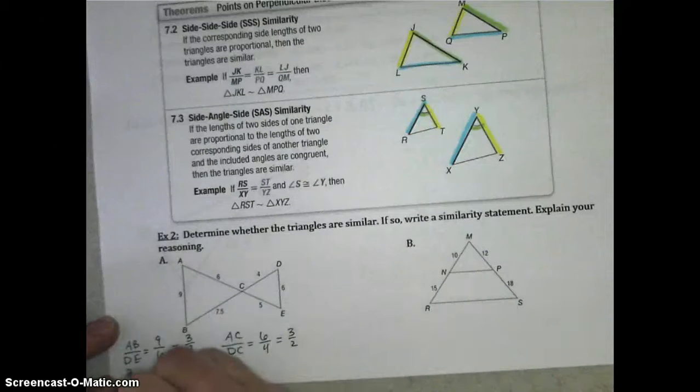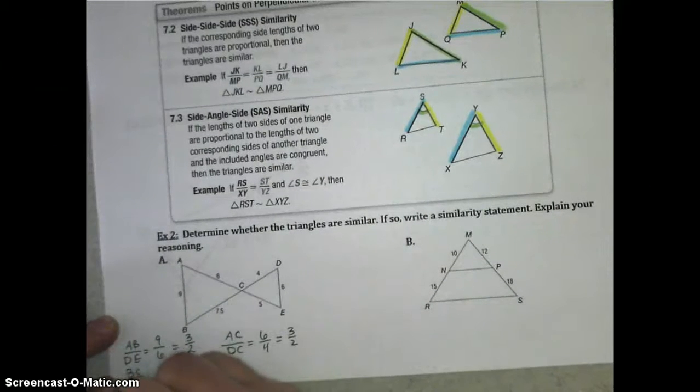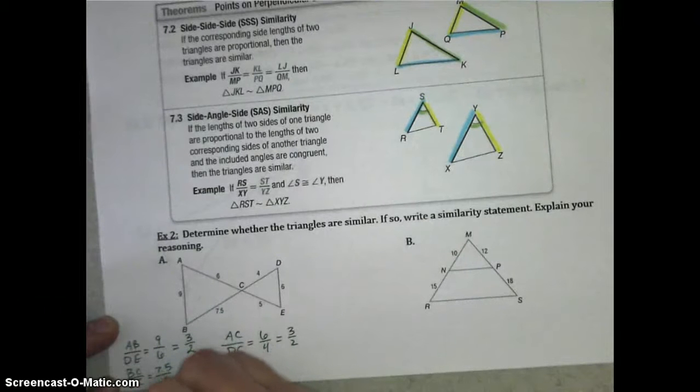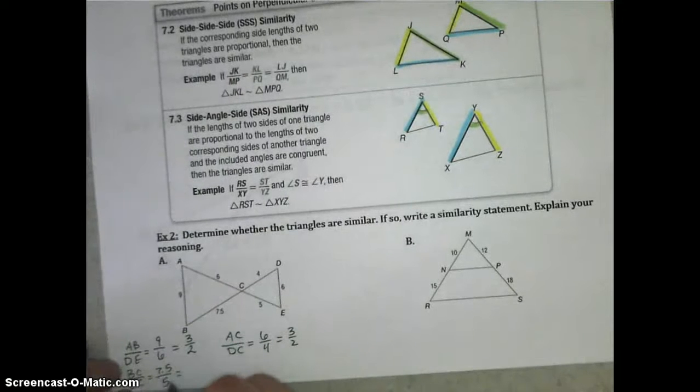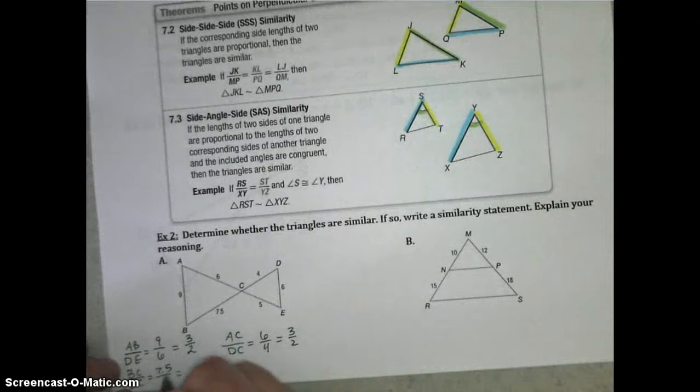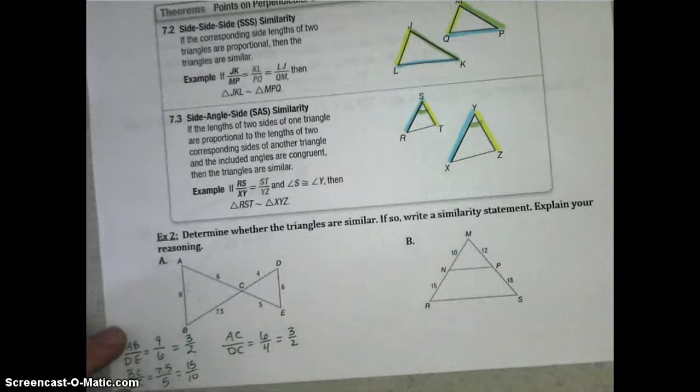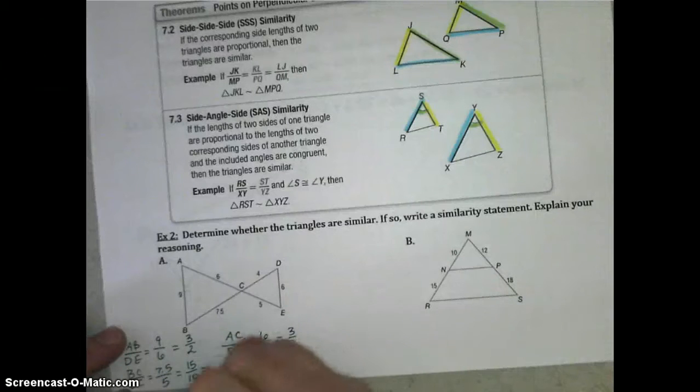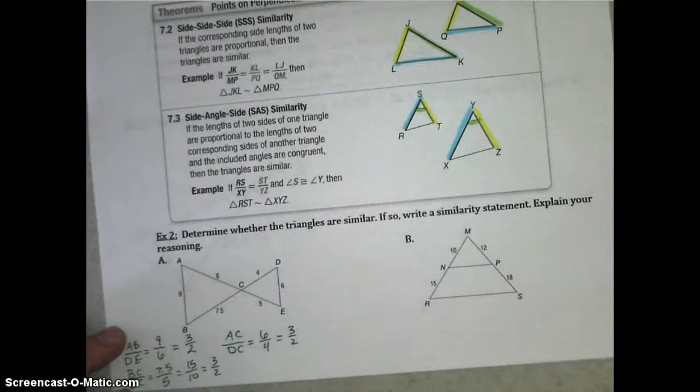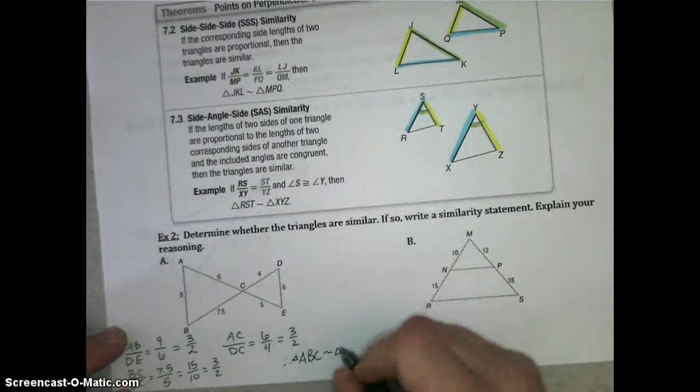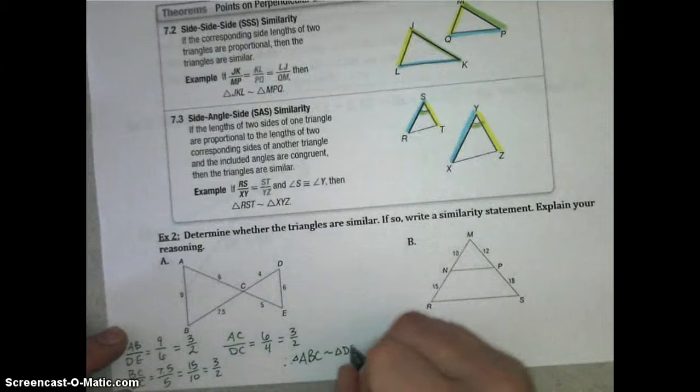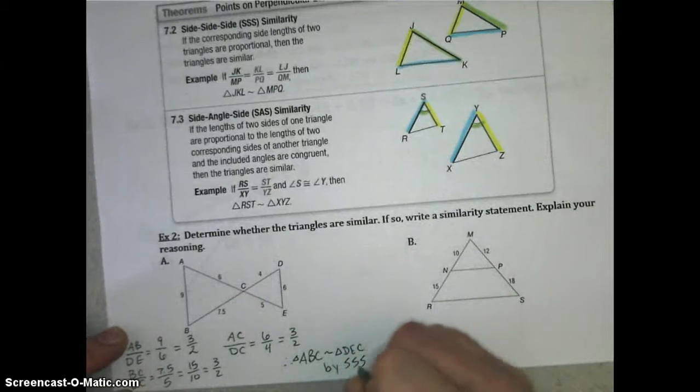And lastly, we should compare BC to EC, which would be 7.5 over five. Now, that one takes a little bit more to reduce, so you would want to handle this a little bit differently. Maybe multiply both parts by two. That would give you 15 over 10 to get rid of that decimal. 15 over 10 also reduces to three over two. So since all three of these ratios are three over two, we can say that triangle ABC is similar to triangle DEC by side-side-side similarity.